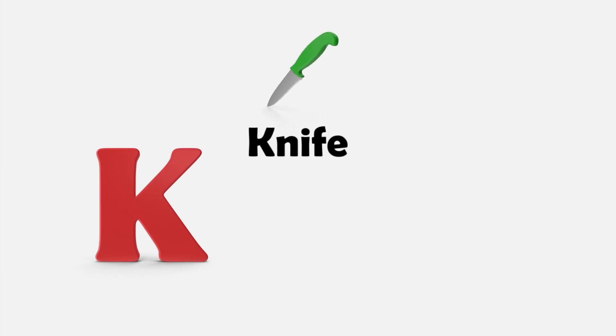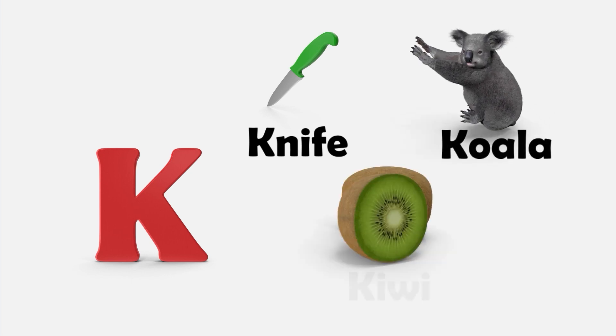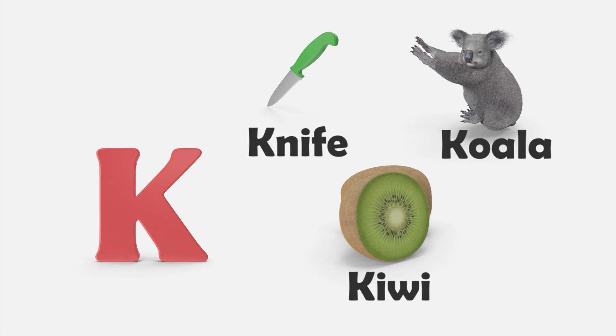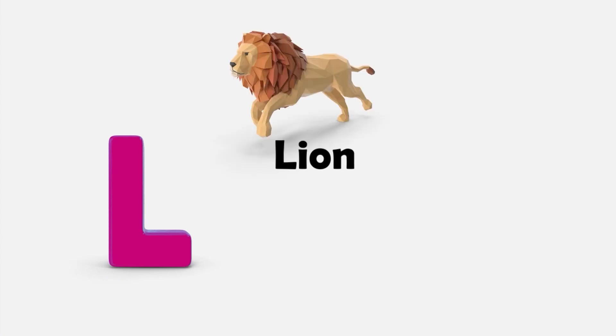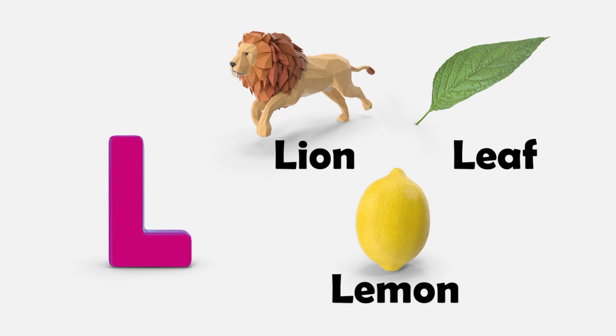K — K is for Knife. K is for Koala. K is for Kiwi. L — L is for Lion. L is for Leaf. L is for Lemon.